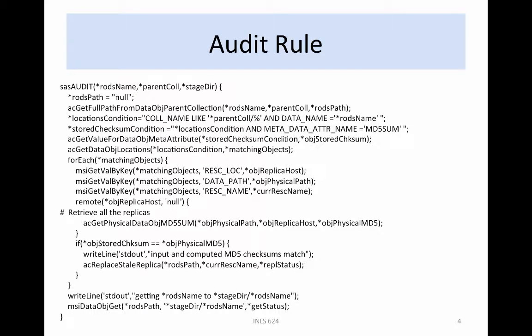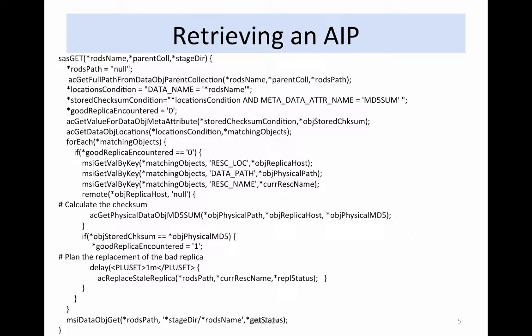The audit rule checks the integrity of the data collection. The rule verifies the checksum of each file, updates replicas to the most recent version, and retrieves a copy to a staging area. Information is written to standard out about each file. The AIP retrieval rule finds the location of all replicas for a file, verifies the checksums, replaces files that have bad checksums, and retrieves a good copy of the data file.